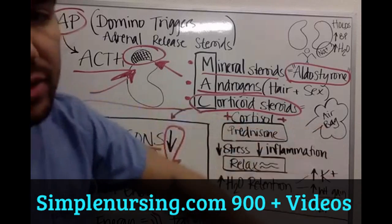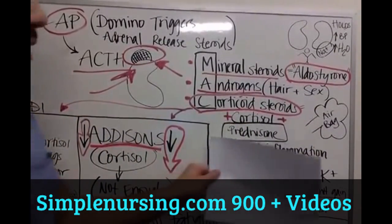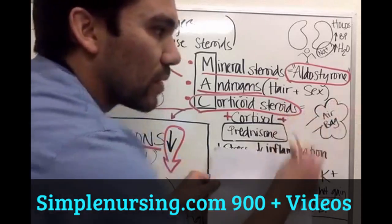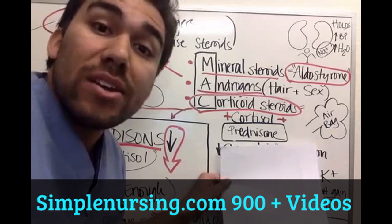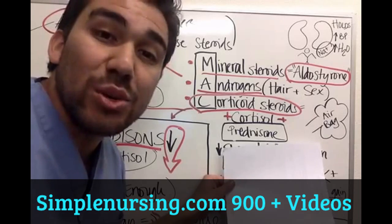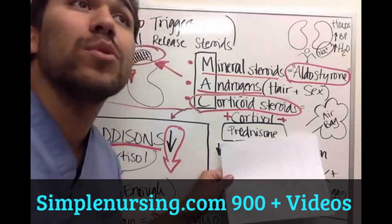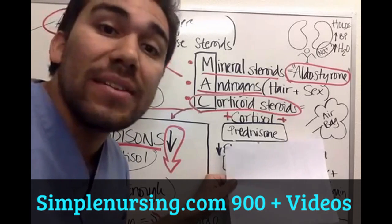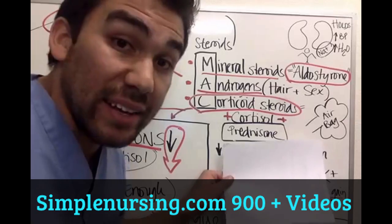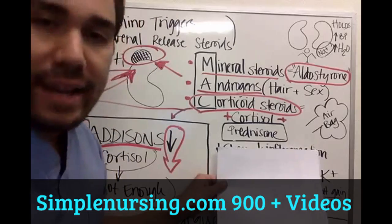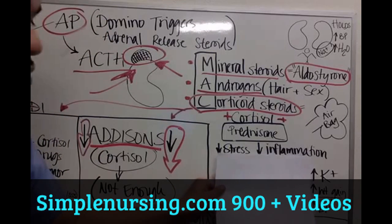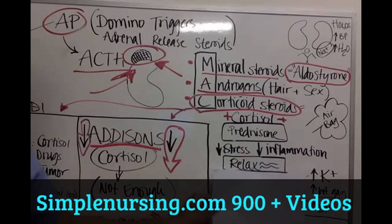What do corticosteroids do? I want you to think of them like an airbag — boom. Airbags are used in your car during an accident to protect you from harm. Similarly, your corticosteroids, anytime you're stressed out, activate and act like an airbag. They protect you from inflammation and the harshness of stress. So your corticosteroids decrease stress and decrease inflammation. They help you relax.